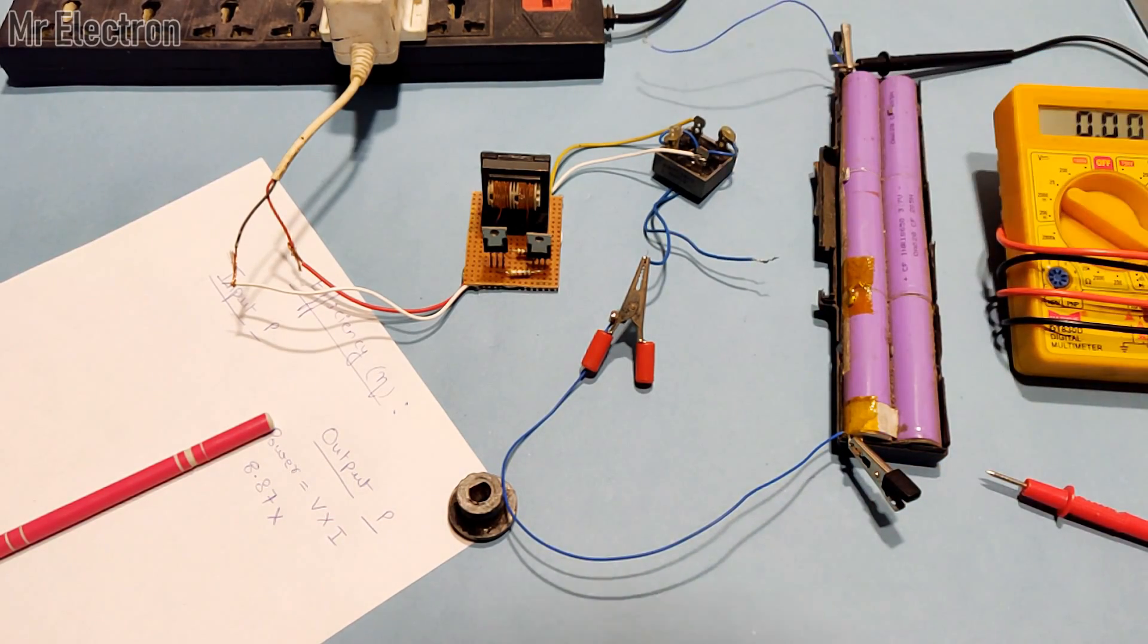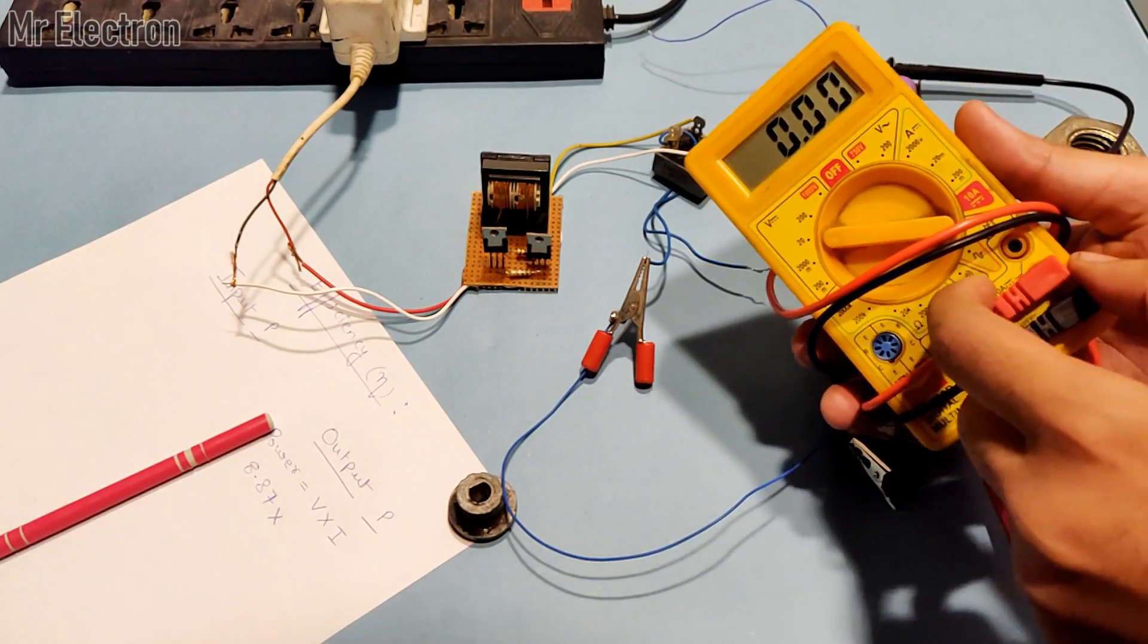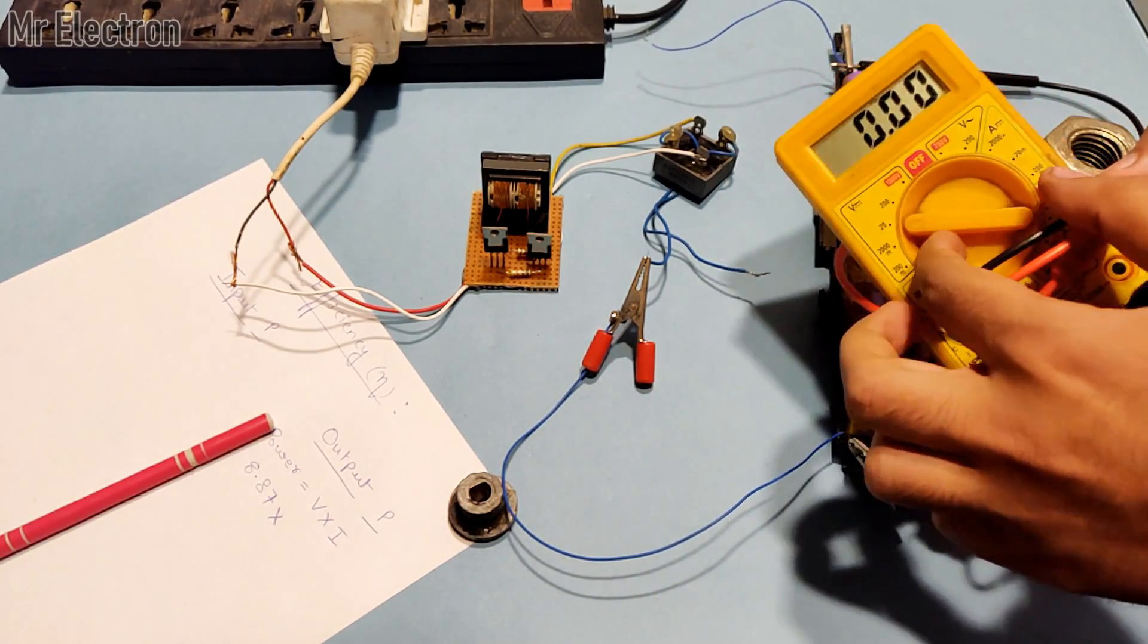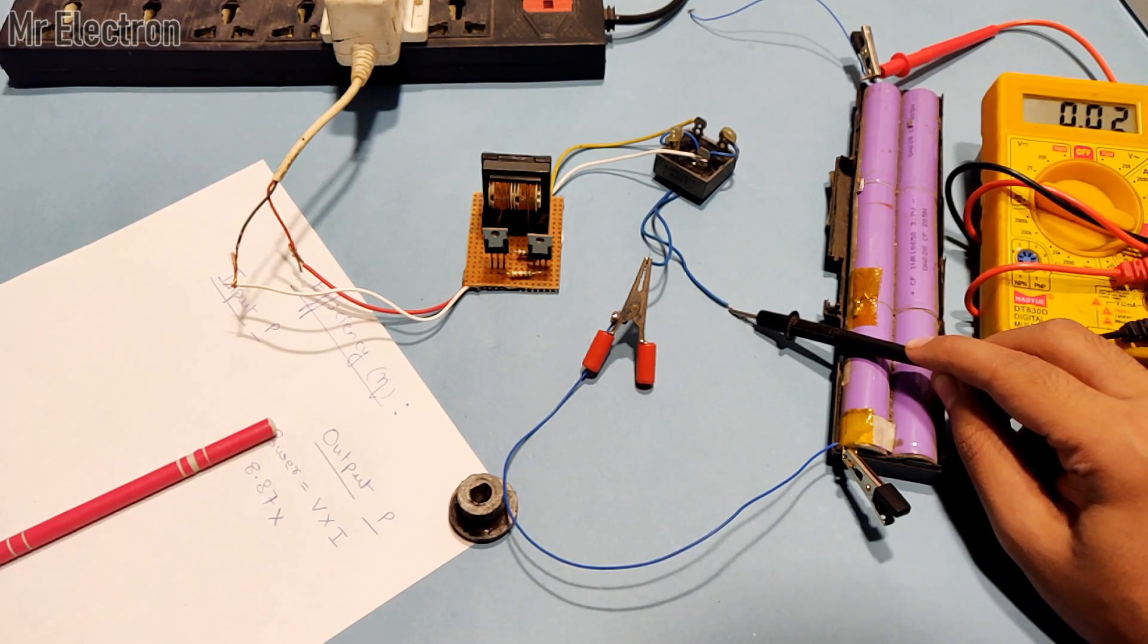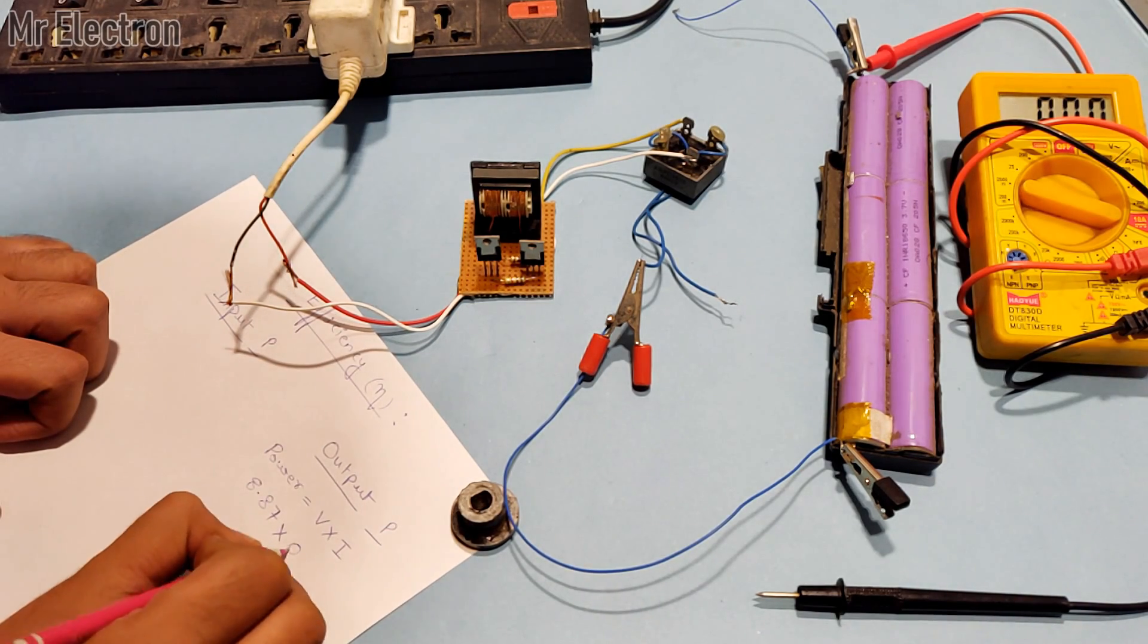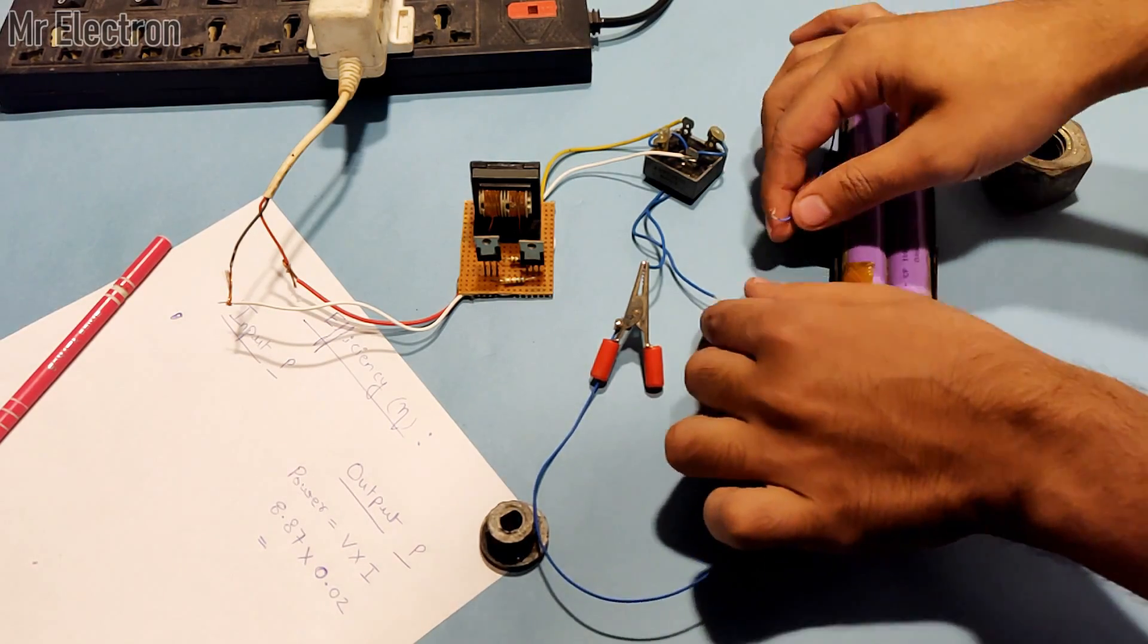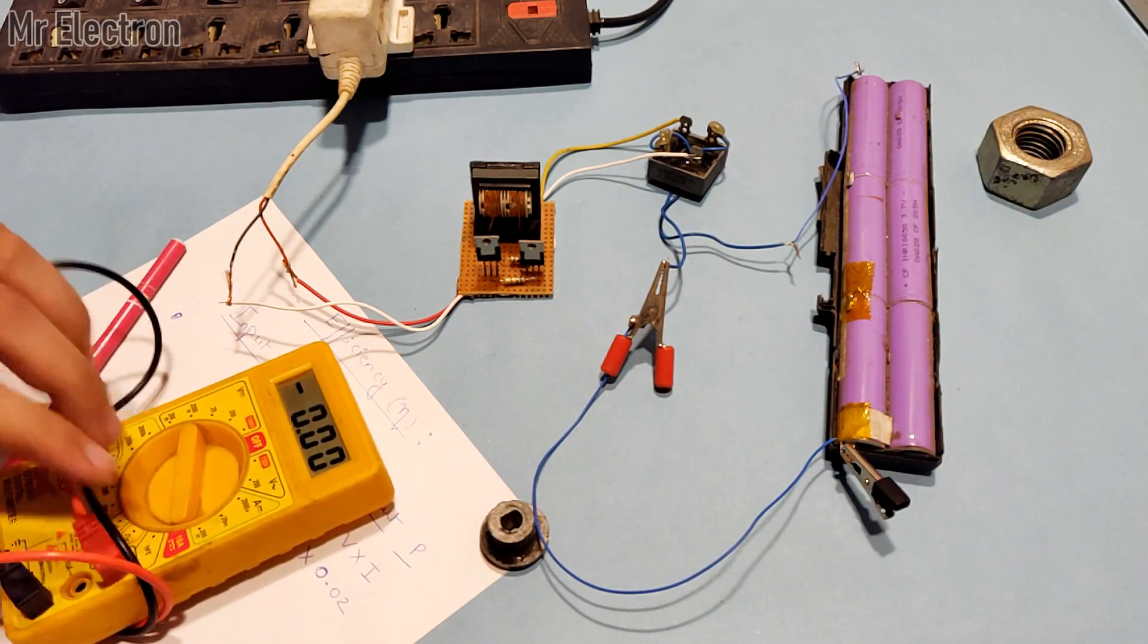We are going to measure the current that is being fed to the battery with this multimeter. For that we have to change the wires on the multimeter and then move the pointer towards the 10 ampere current mode. As you can see, the multimeter is indicating 0.02 amperes. So we will multiply 8.87 volts with 0.02 amps, which will give the total power that is being fed to the battery.